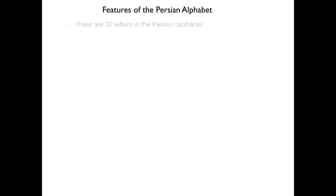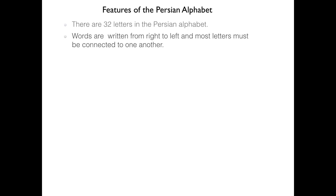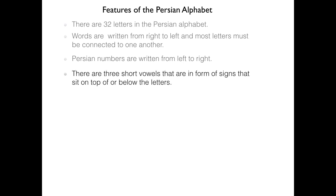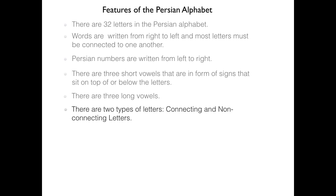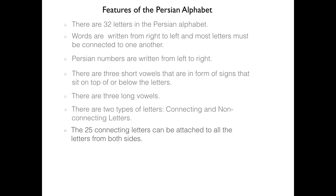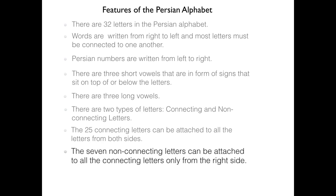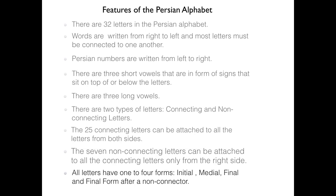Let's review what we just learned. There are 32 letters in the Persian alphabet. Words are written from right to left and most letters must be connected to one another. Persian numbers are written from left to right. There are three short vowels in the form of signs that sit on top of or below the letters. There are three long vowels. There are two types of letters: connecting and non-connecting. The 25 connecting letters can be attached from both sides; the 7 non-connecting letters only from the right side. All letters have one to four forms: Initial, Medial, Final, and Final form after a non-connector.